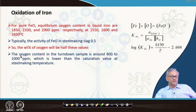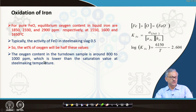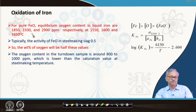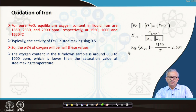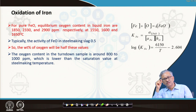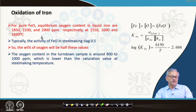For pure FeO, the equilibrium oxygen in liquid iron can be calculated at 1550, 1600, and 1650°C, giving values of 1850, 2330, and 2900 ppm respectively. Typically in steelmaking slag, activity of FeO is 0.5, so at 1600°C the value is about 1165 ppm. In practice, the turndown sample oxygen is around 800 to 1000 ppm — lower than the saturation value — because this equilibrium is at the slag-metal interface, and mass transfer limits mixing into the bulk liquid.